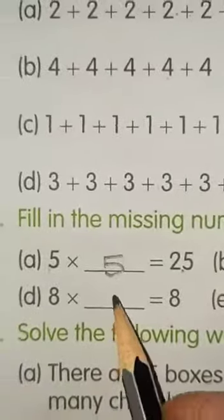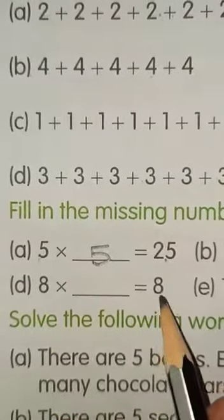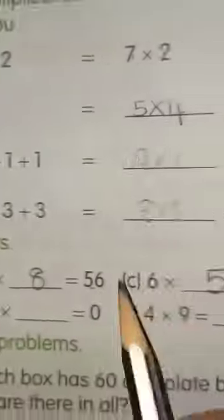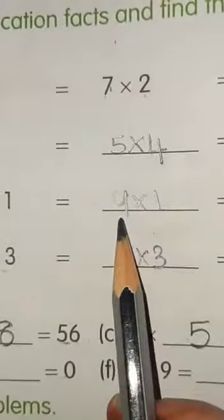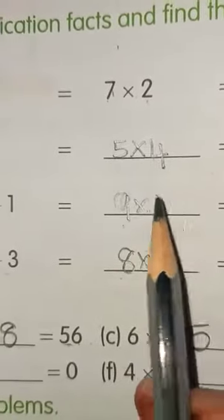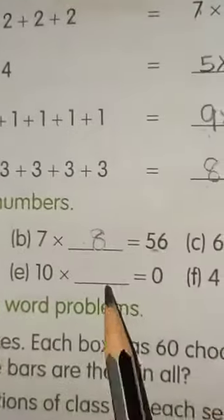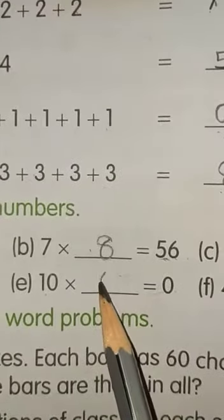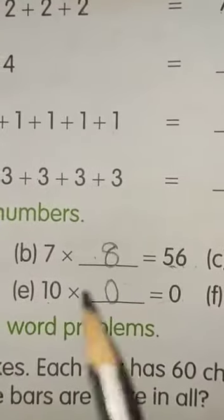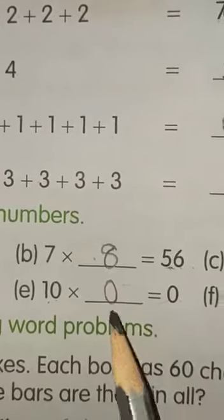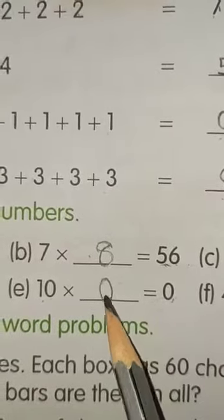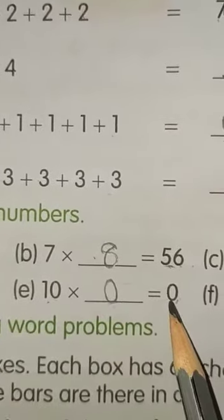Next, what should be multiplied with 8 so that you get 8? You have to multiply it by 1. Here, as I told you, if we multiply any number with 1, we will get that number only. So, 8 ones are 8. Here, what should be multiplied by 10 to get 0? You have to multiply it by 0. Any number which is multiplied by 0 is 0 only. If we multiply any number with 0, we will get 0.